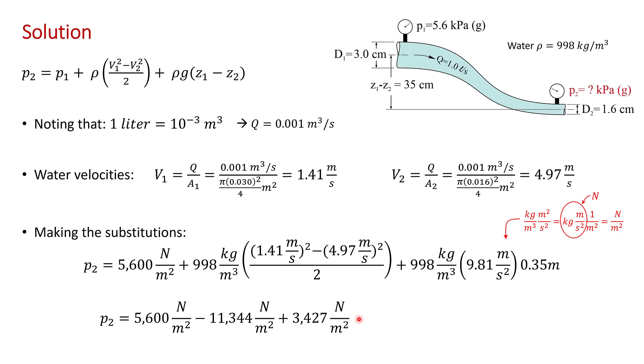Here, I've evaluated all the terms. When we add up all the terms, we get that P2 equals minus 2,318 newtons per square meter, or minus 2.3 kilopascals.